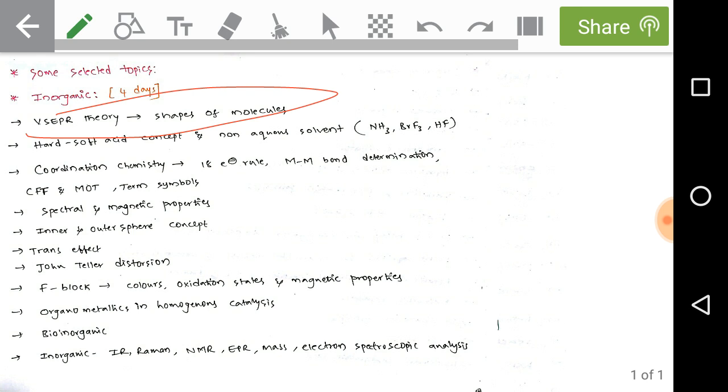The shapes of molecules is very important. We are getting four marks and two marks questions on it, on the shapes of molecules of main group elements. Here we are studying SF6, XeF4, ammonia and BrF3. Coordination chemistry is very important.